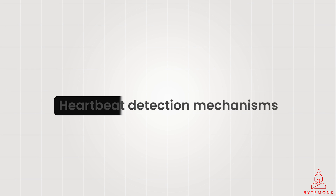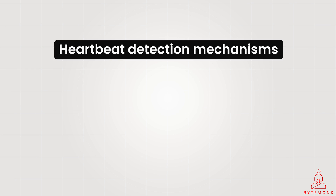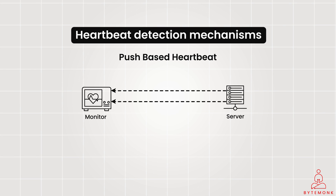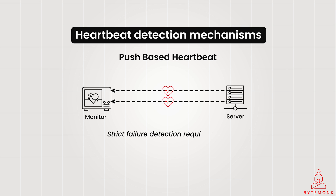Now let's check out some of the other types of heartbeat detection mechanisms and discuss their implications. In a push-based model, nodes or components actively send their heartbeat signals at regular intervals to designated recipients, such as monitoring systems or other nodes. Since nodes proactively push their status, potential failures can be quickly identified. It is especially useful for monitoring systems with strict failure detection requirements. However, it causes higher network overhead because each node generates periodic heartbeat traffic, potentially increasing congestion.